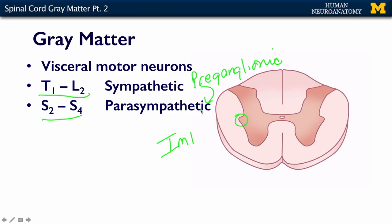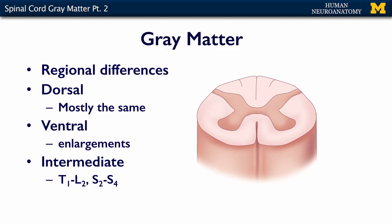These neurons are motor neurons — they're efferent — and they innervate your blood vessels, your intestines, your heart, your bladder, and all those kinds of things. Regional differences within the ventral horn are more dramatic than in the dorsal horn, because of the two enlargements — both cervical and lumbar — that have lots of extra neurons to innervate your limbs, and because of the intermediolateral cell column containing the neurons of your autonomic nervous system, the sympathetics and parasympathetics.